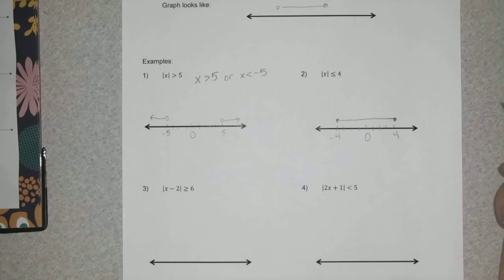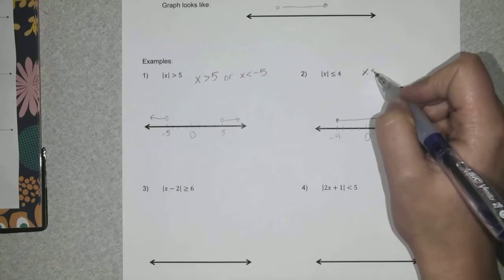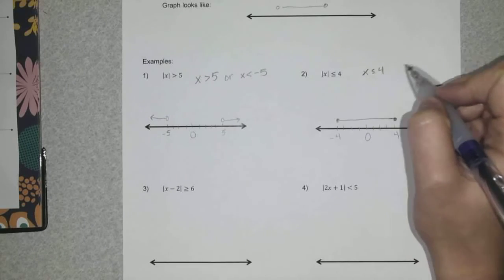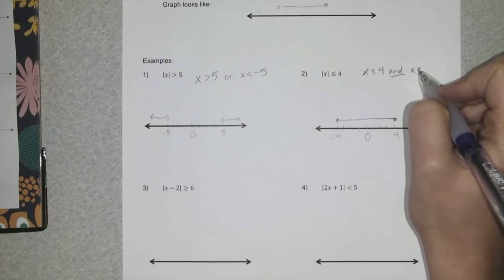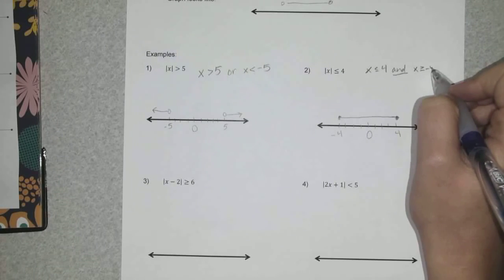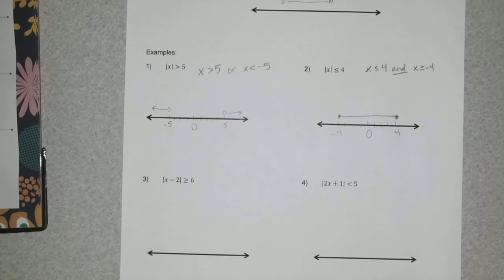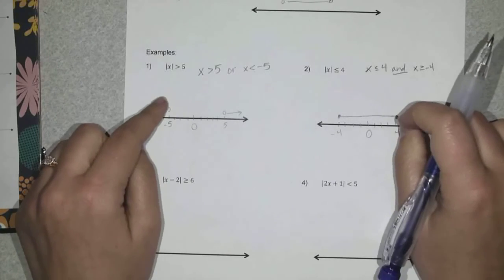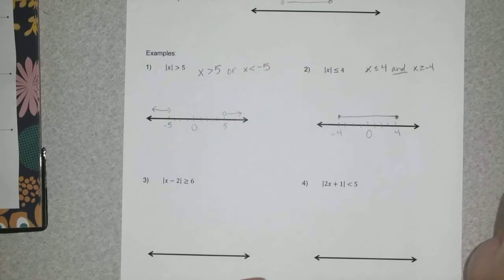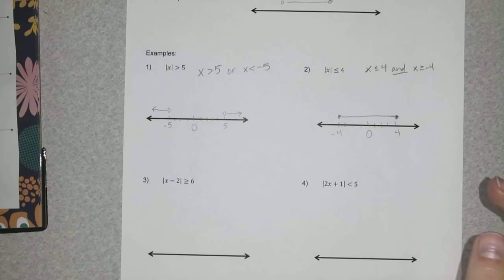Getting that answer algebraically, I make two inequalities: x is less than or equal to 4, and x is greater than or equal to negative 4. That matches our graph. Those two examples should help you understand why we make two inequalities when working with absolute value.